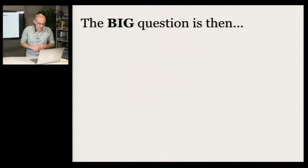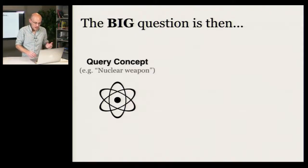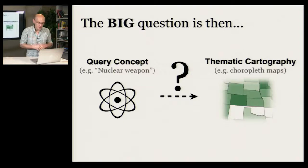So the big question for us is, how can we convert an abstract, non-geographically referenced query concept, like for instance, nuclear weapon, into a form that, like obesity rates by state, or poverty rates by state, like we saw earlier, into a form that can be visualized using thematic cartography?